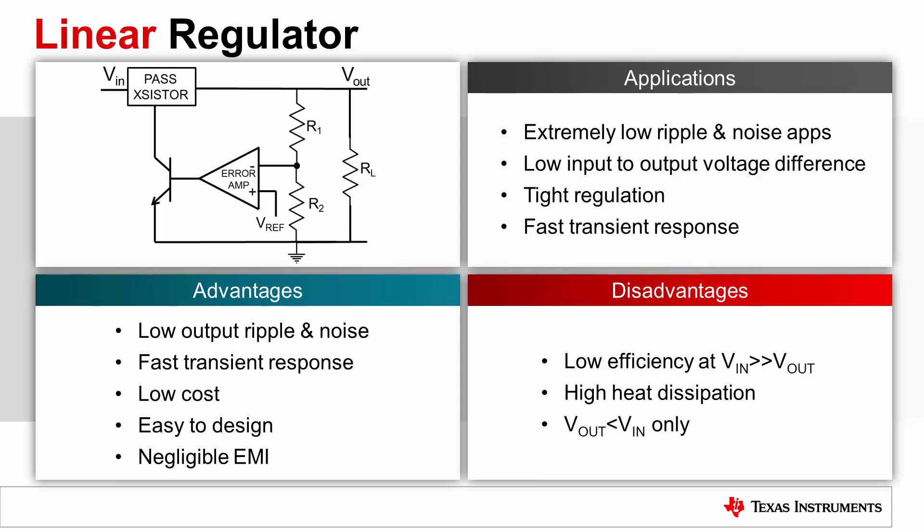The pass element can be reduced to a very low resistance, which allows a small potential difference between input and output. However, this dropout, as it is commonly referred to, must be verified in the LDO datasheet. Another big advantage of the linear regulator is its fast transient response due to the input always being connected to the output. And lastly, ease of use, low cost, and negligible EMI concerns round out the linear regulator's advantages.